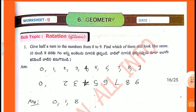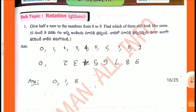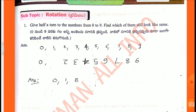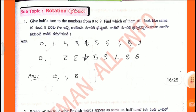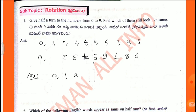Answer: Numbers 0, 1, 2, 3, 4, 5, 6, 7, 8, 9. On giving a half turn, the numbers 0, 1, and 8 look the same.